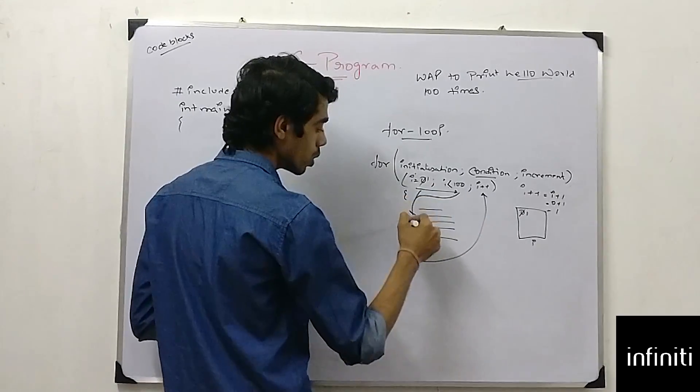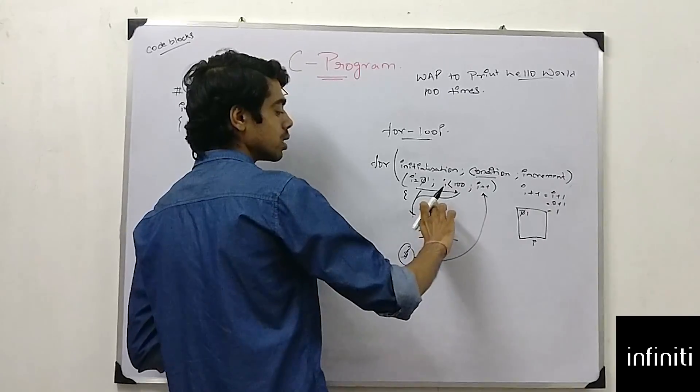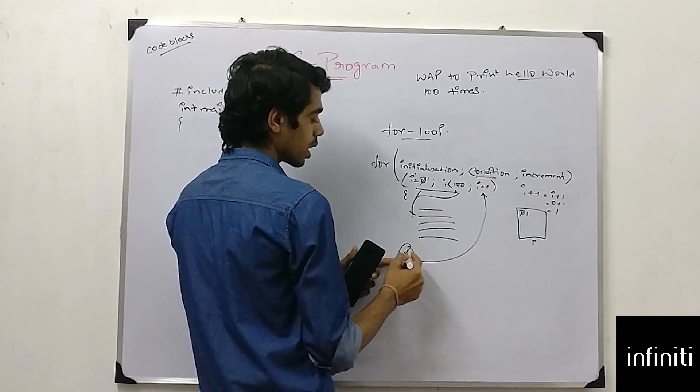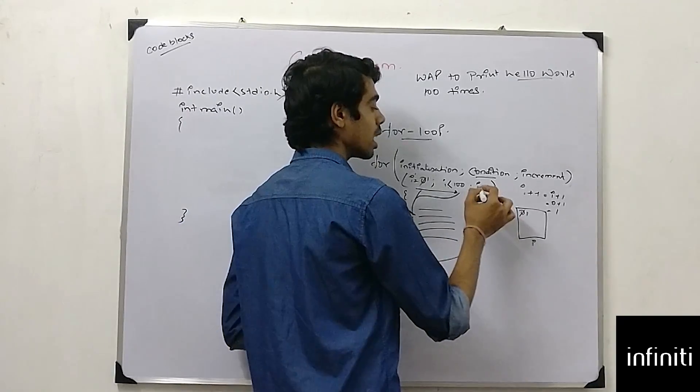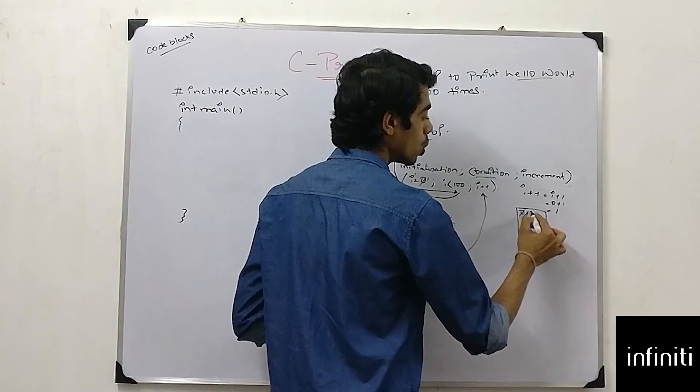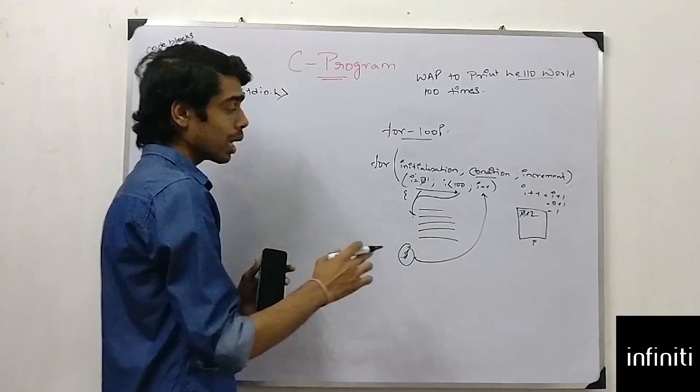After satisfying this, it again go inside this block of statement. Satisfy this block of statement. After getting this closing braces, it will go to i plus plus and again increment my value of one to two. By this way, i behaves.